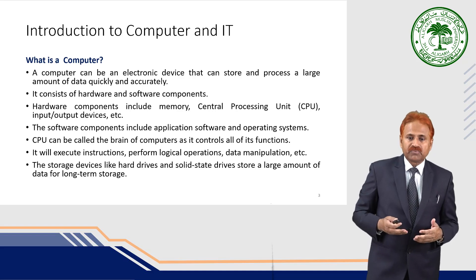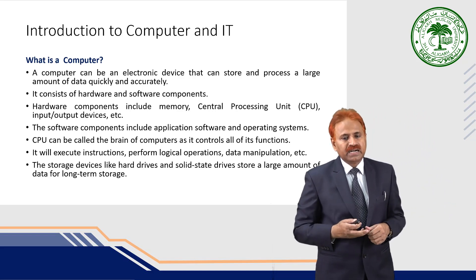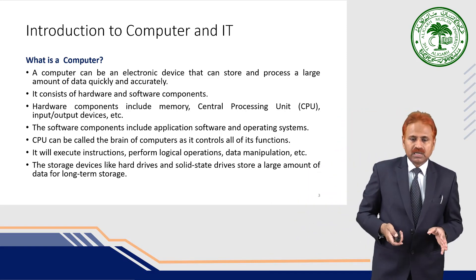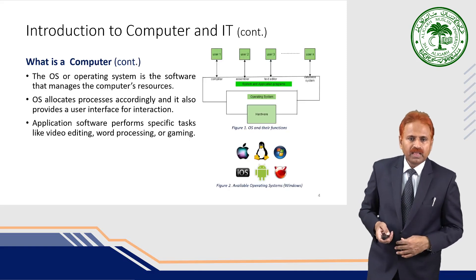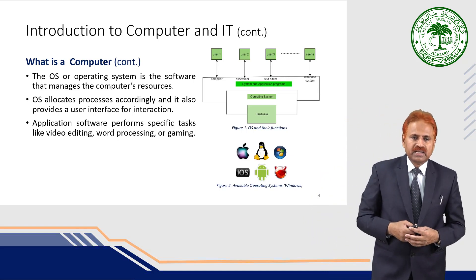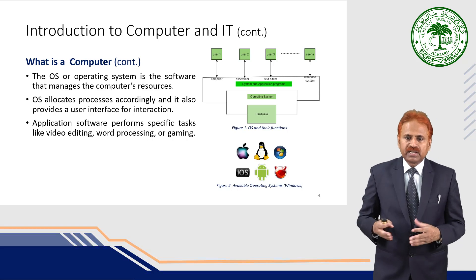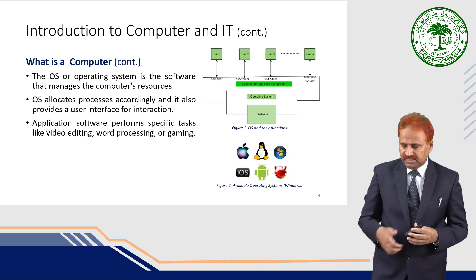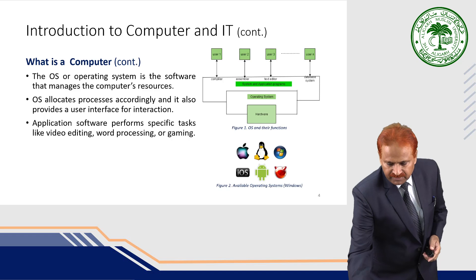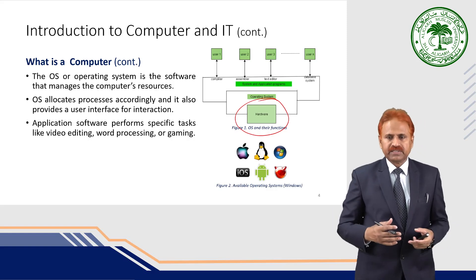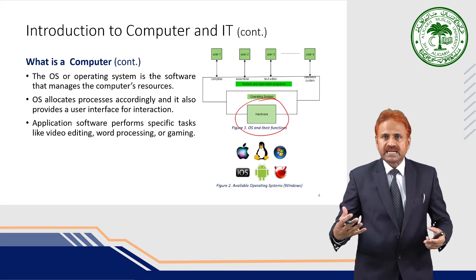The CPU, the central processing unit, is the brain of the computer. It is the main component of the computer system and controls all its functions. It executes instructions, performs logical operations, and data manipulations. Storage devices like hard drives and solid state drives store a large amount of information for the long term. The operating system is the software that manages the computer's resources and allocates processes accordingly, providing a user interface for interaction. In the diagram, you can see that at the core we have the hardware — the CPU and related devices — which performs your desired tasks.